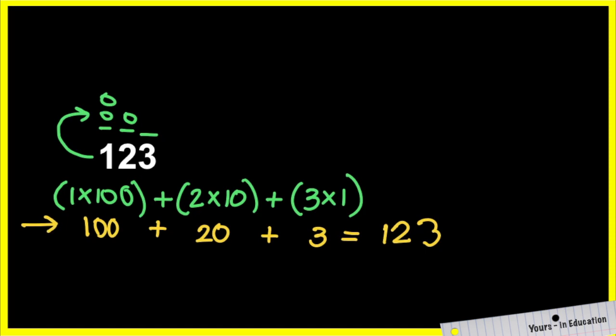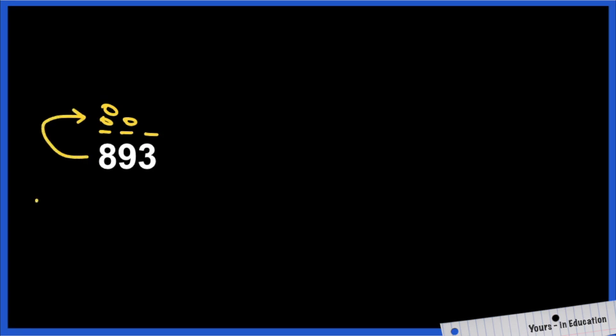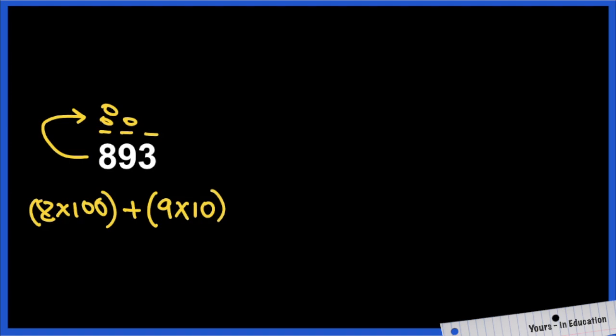Here we have expanded form, and the green one is expanded notation. Let's do the next exercise. We have ones, tens, and hundreds. As we said before, we're going to multiply the groups by the place value of each digit. I have 8 groups of 100, plus 9 groups of 10 — 10, 20, 30, all the way to 90 — plus 3 groups of 1.